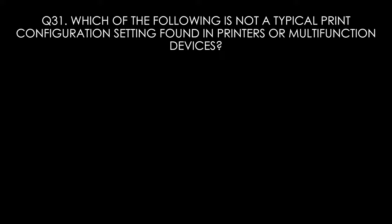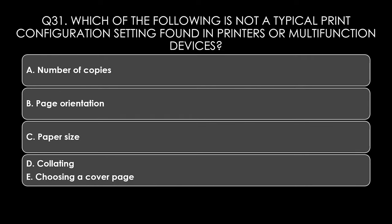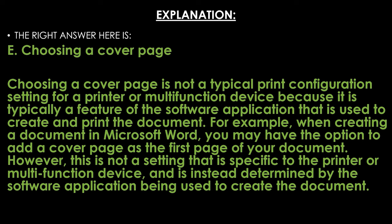Question thirty-one. Which of the following is not a typical print configuration setting on printers or multifunctional devices? Options: A: number of copies, B: page orientation, C: paper size, D: collating, E: choosing a cover page. The right answer is E, choosing a cover page, which is not a typical print setting found on printers. It is typically a feature of the software application used to create the document — for example, Microsoft Word may allow you to add a cover page, but this is not a setting specific to the printer itself.